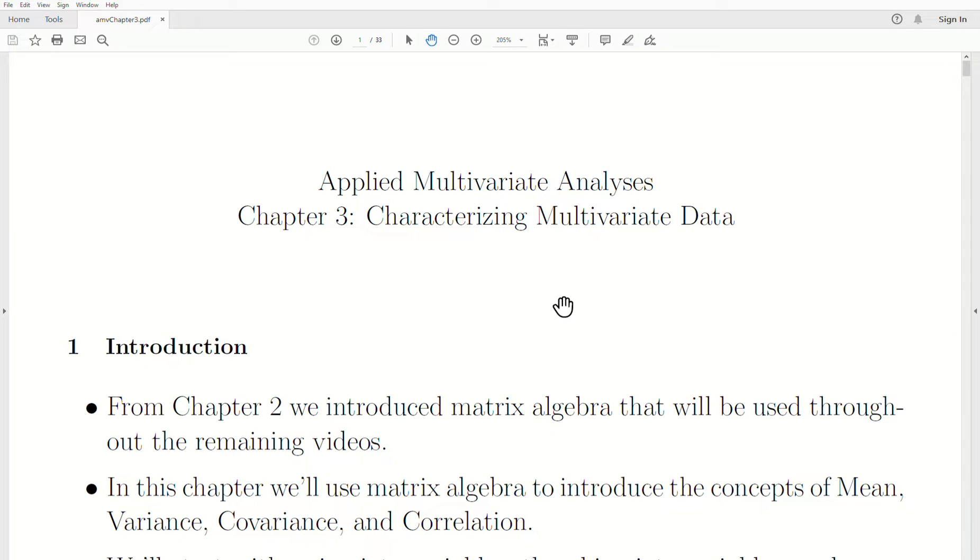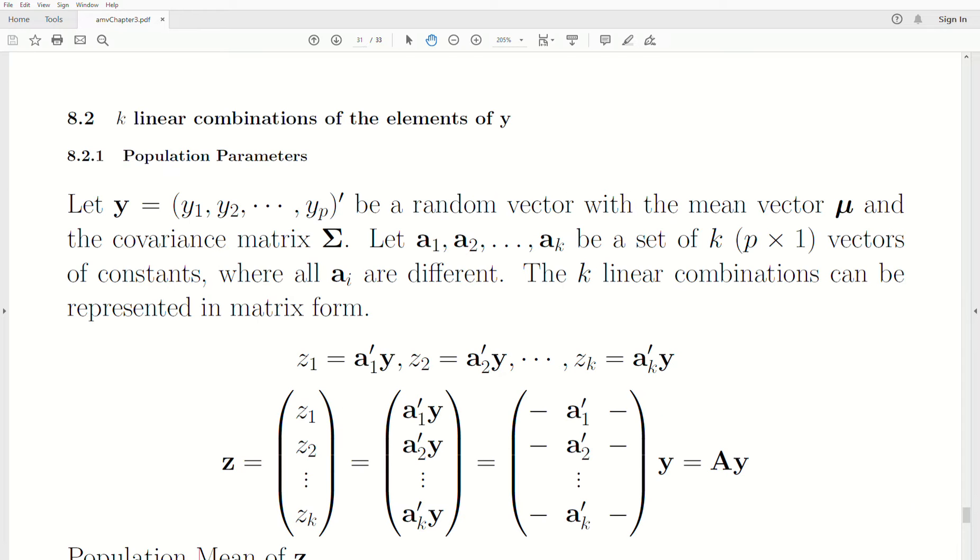Hello, this is the next video in a playlist that I'm calling Applied Multivariate Analysis. We're in Chapter 3, which I'm calling Characterizing Multivariate Data. Let's jump into today's topic, where we're taking k linear combinations of the elements of y, where y is a random vector.